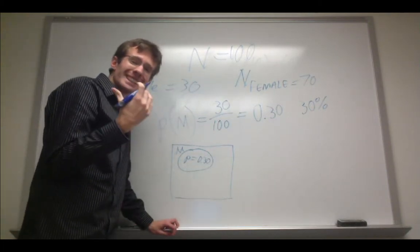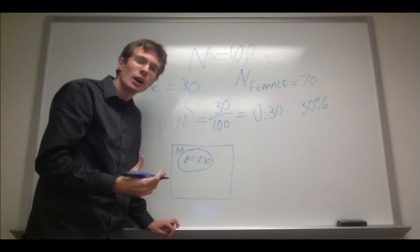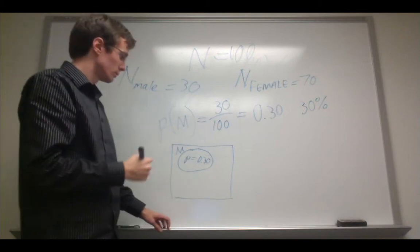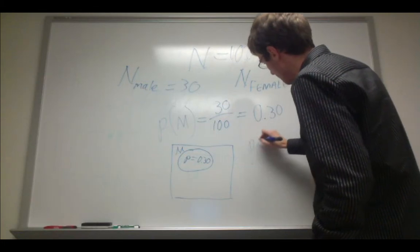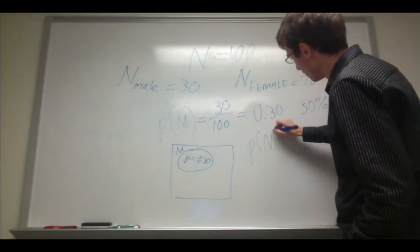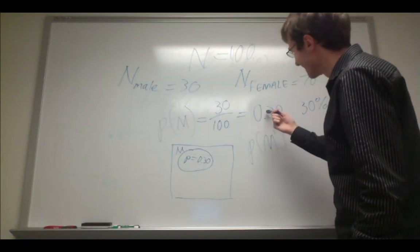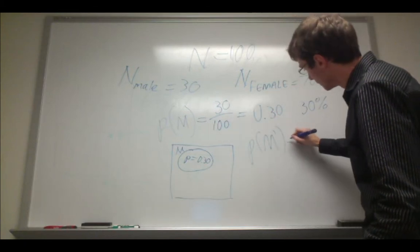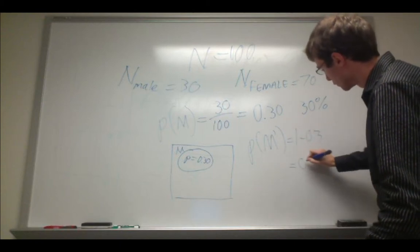Now, we can also take the complement of that, which is, what is the probability of all other outcomes besides those successful outcomes? We can represent this as P M apostrophe, and it's simply 1 minus this probability of those successful outcomes. So, it would be 1 minus 0.3, or 0.7.